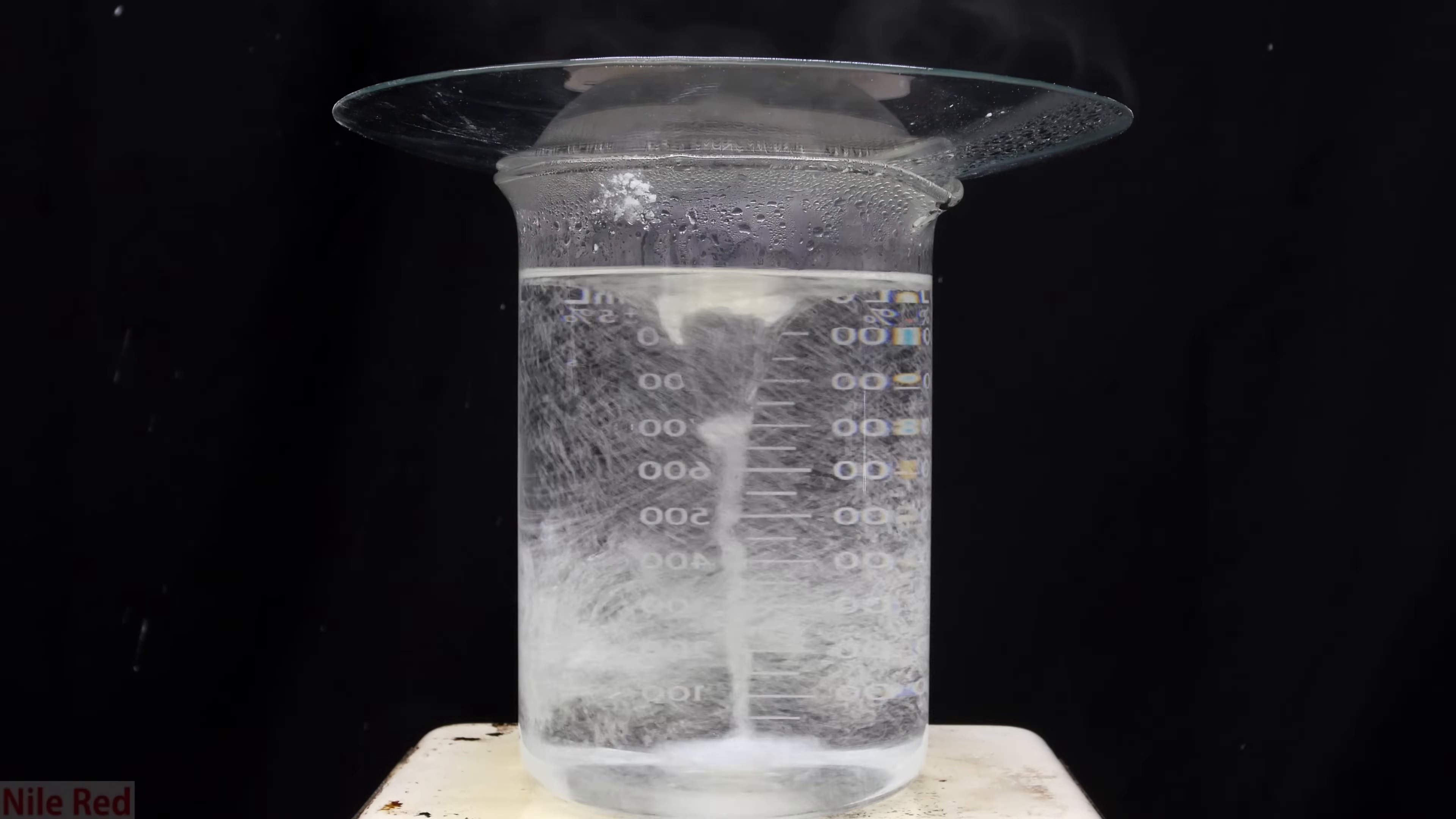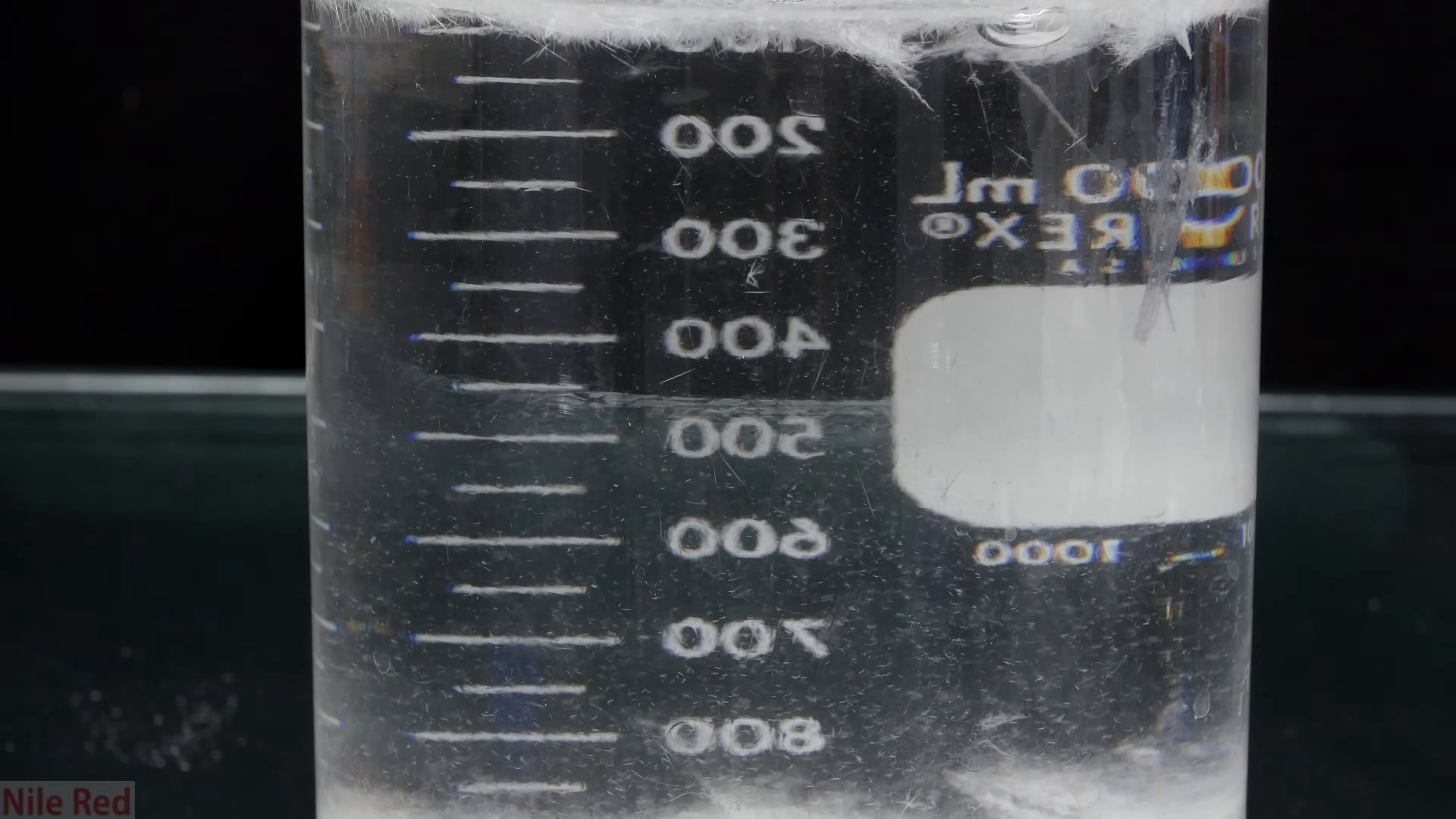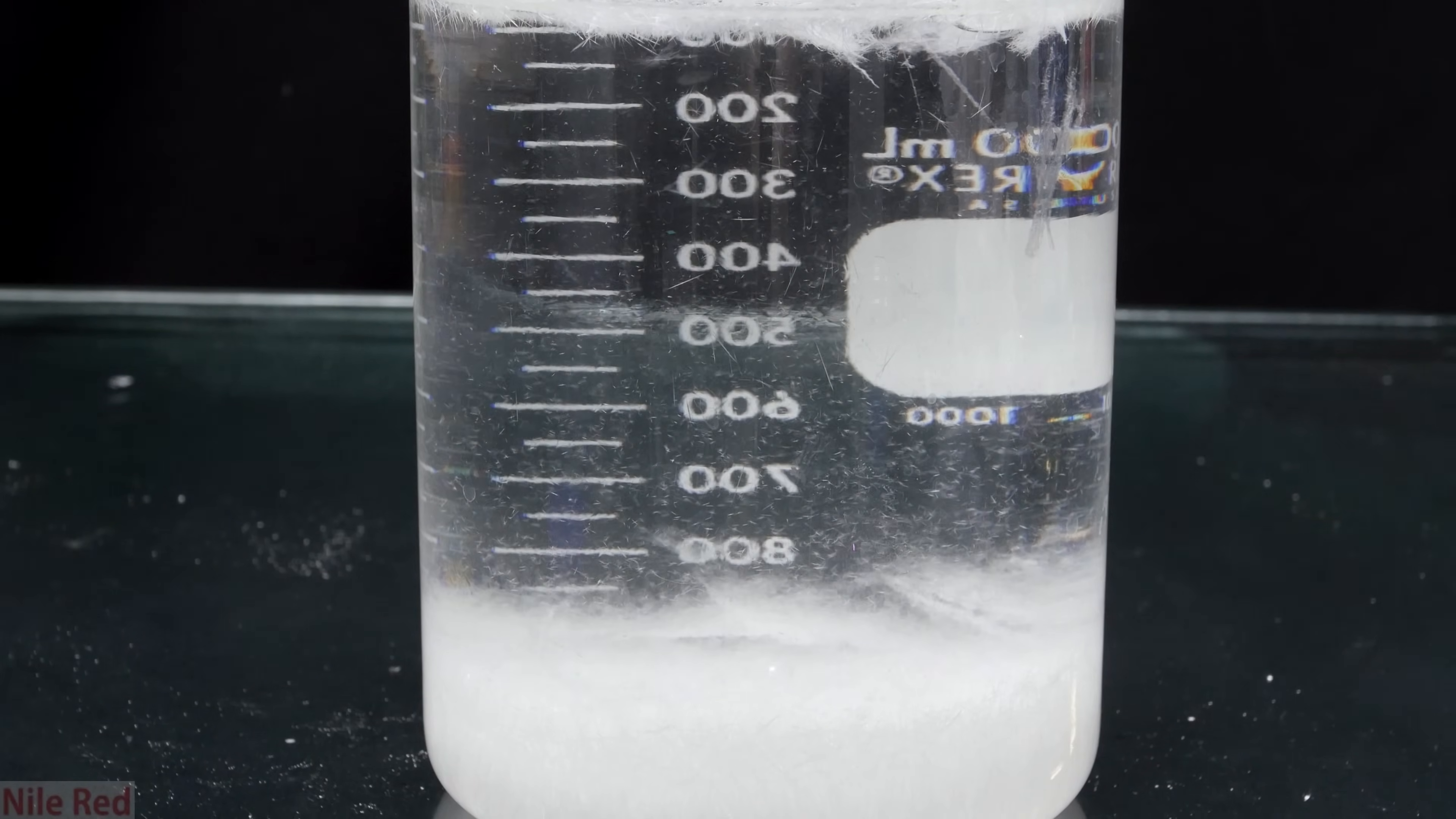Eventually, we'll reach a point where it looks like pretty much all of the benzoic acid has dissolved. When this happens, we take it off heat and we allow it to cool slowly to room temperature. As it cools, some very nice crystals should start to form. After a while, we get a lot of crystals falling and it kind of looks like it's snowing.